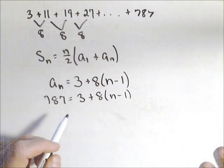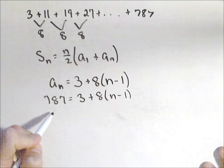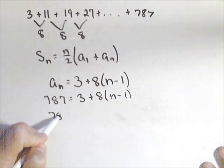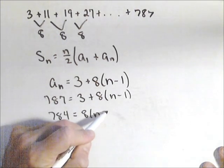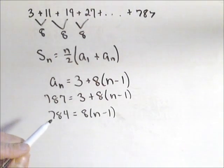Our goal is to solve for n, so we know how many terms we have. So we subtract three from both sides. We have 784 equals eight times n minus one. And then we're gonna divide both sides by eight.